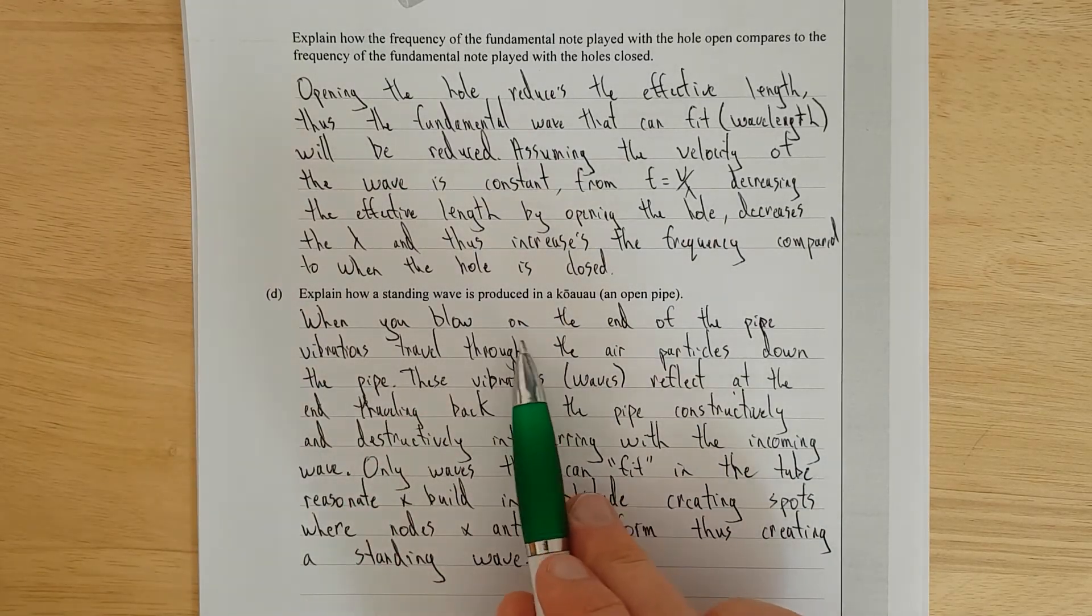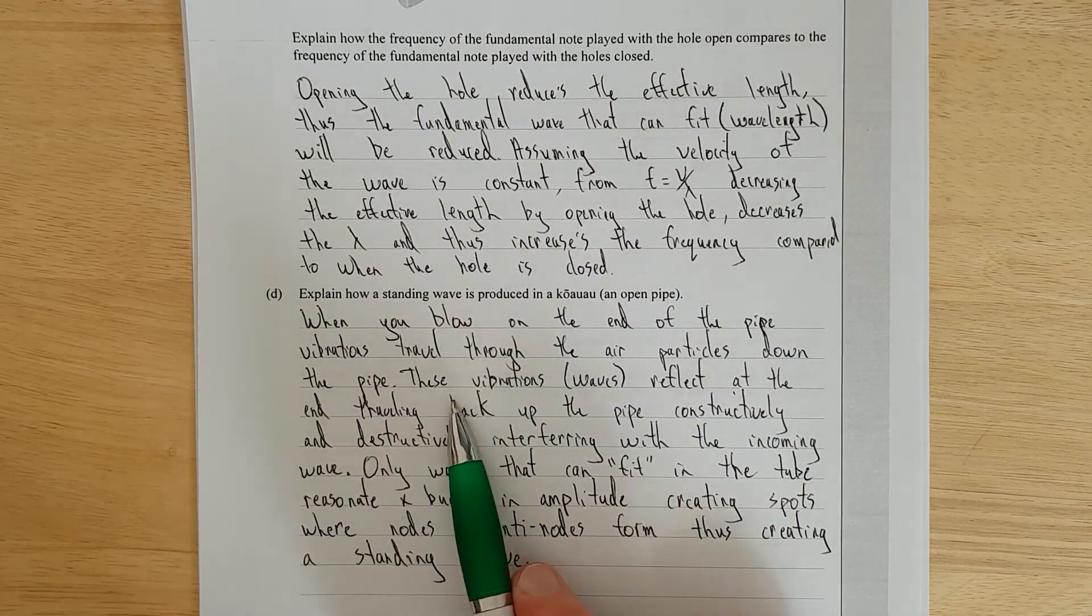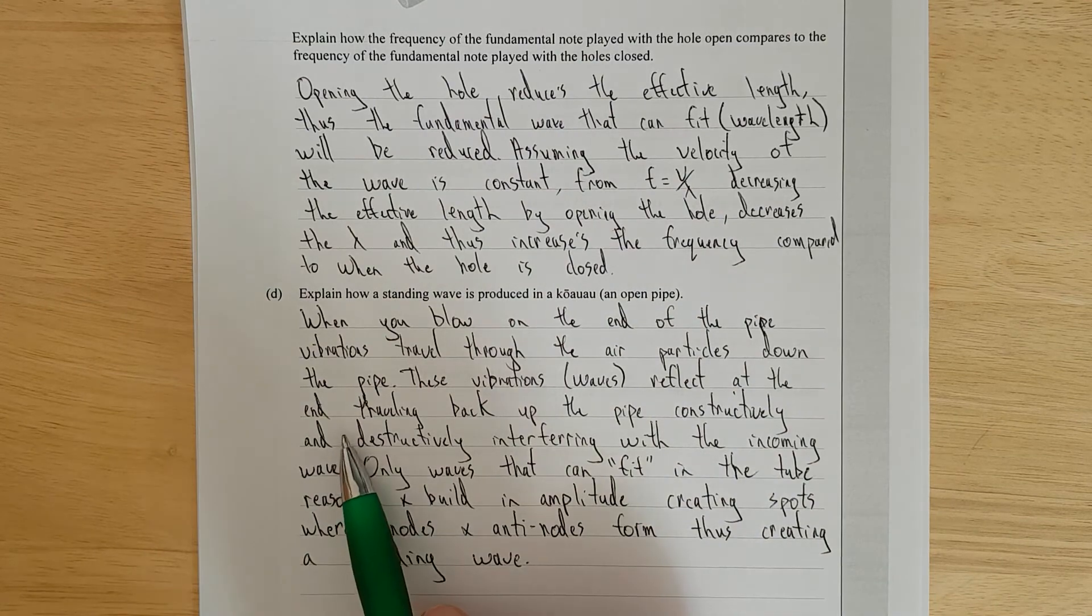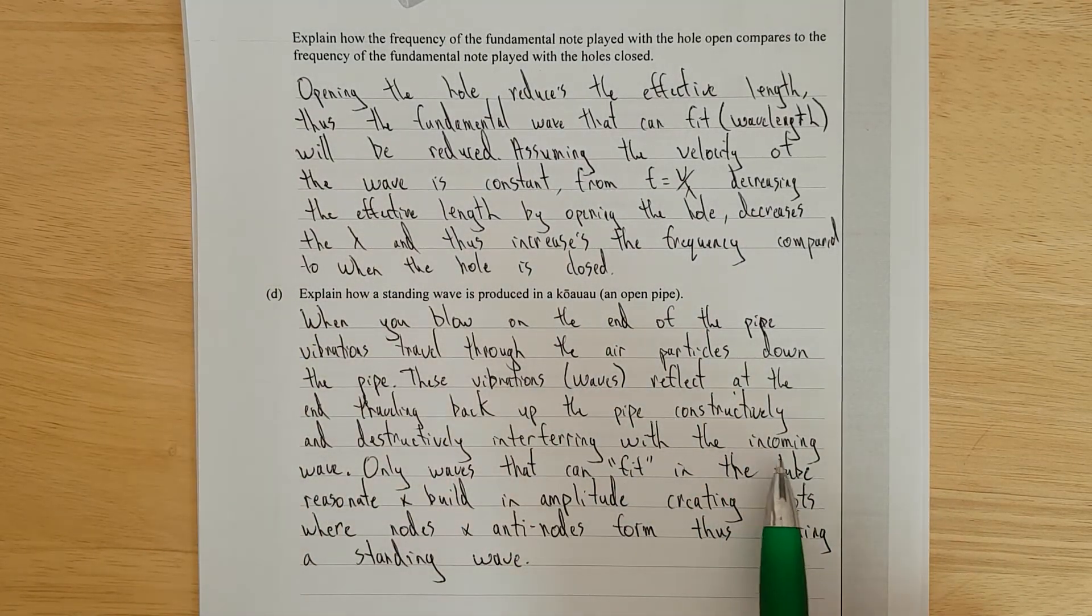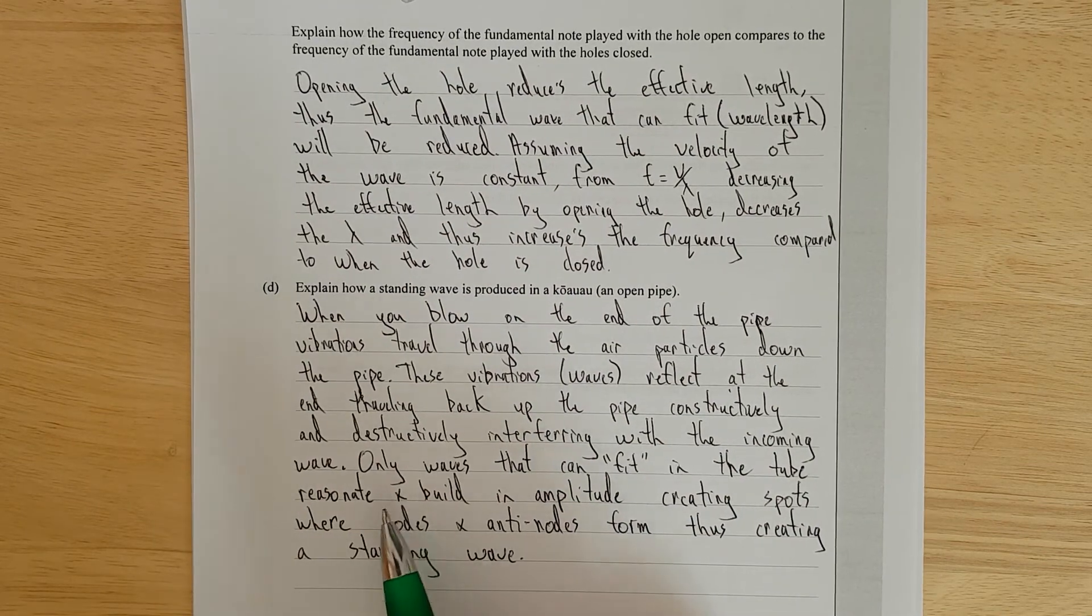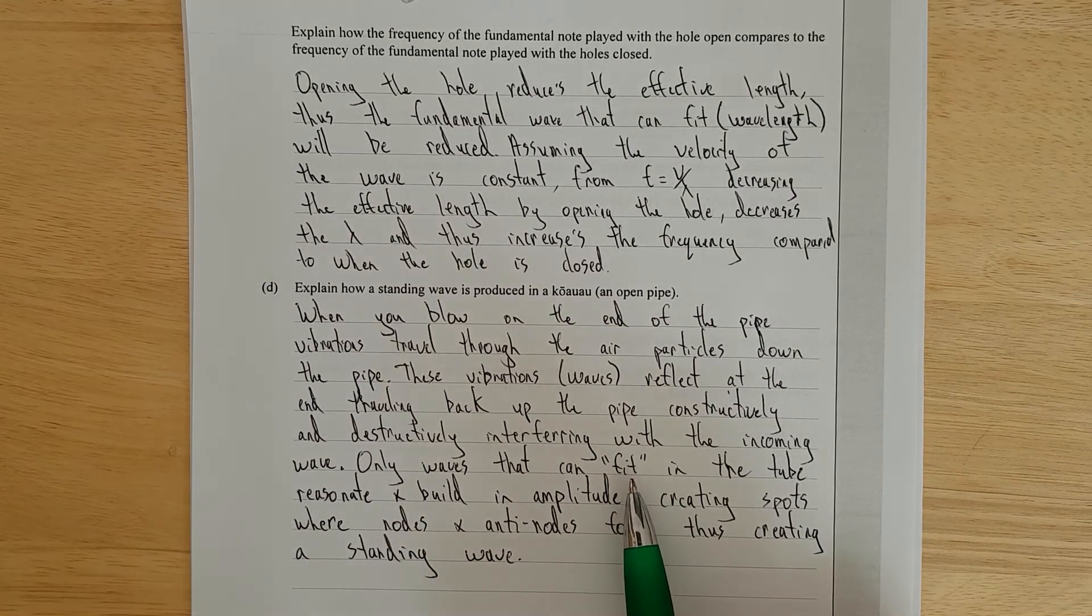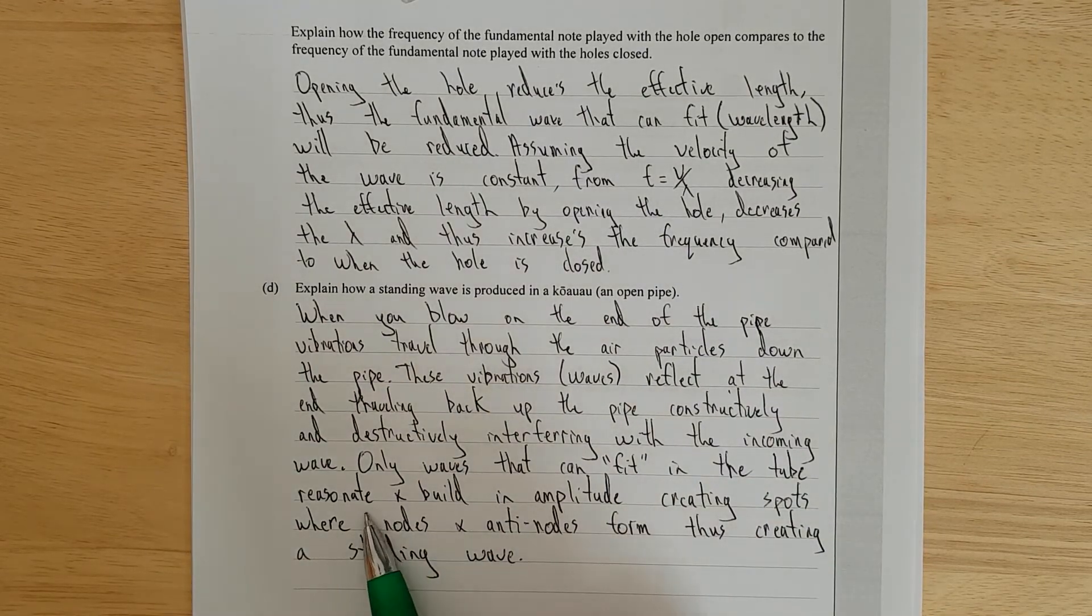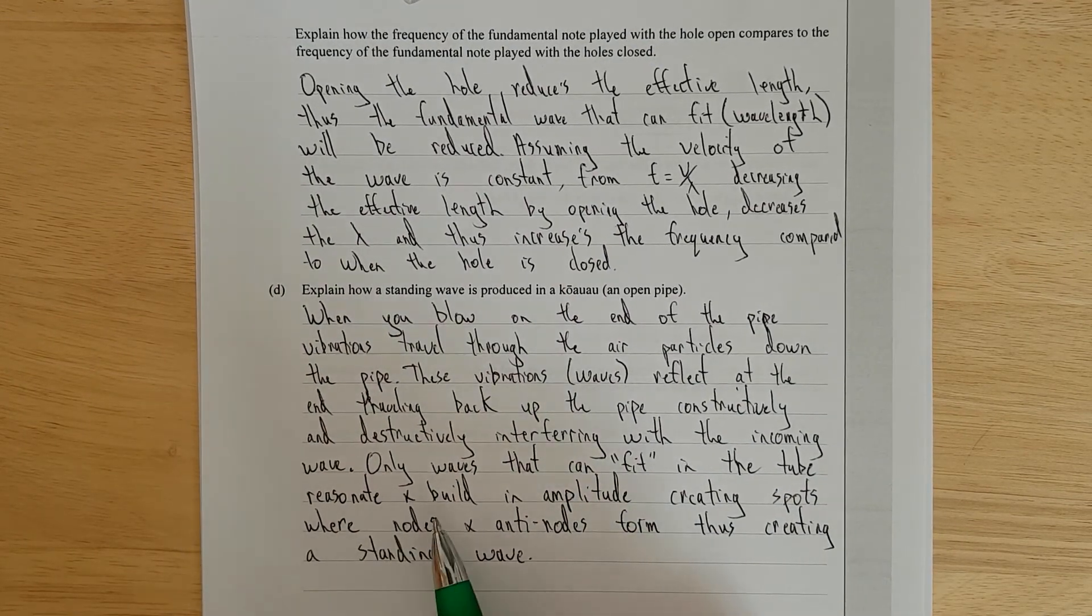Right, so I said, when you blow on one end of the pipe, vibrations travel through the air particles down the pipe. These vibrations, brackets waves, reflect at the end, traveling back up the pipe constructively and destructively, interfering with the incoming wave. Only waves that can, I would just put like quotation marks, fit, because it's loosely used. And the tube resonate, I mean, this kind of links back to mechanics, and build up an amplitude creating spots when nodes and anti-nodes form, thus creating a standing wave.